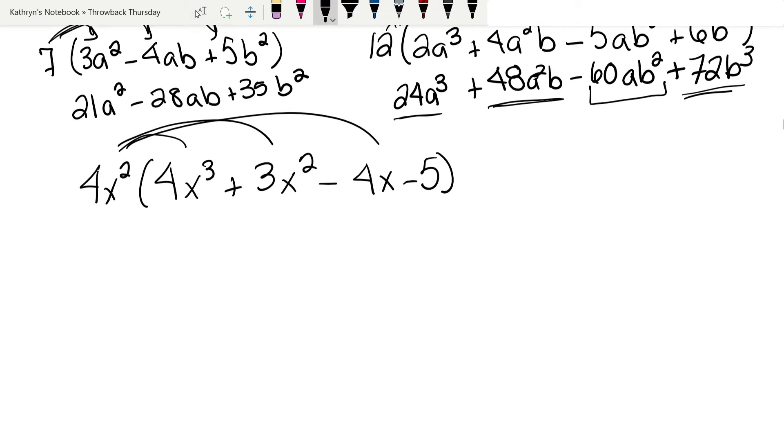We're going to have 4x². I'm going to write this one out. 4x² times 4x³. 4 times 4 is 16. Now when we multiply and we have the same base, we just add the exponents. So this will be x⁵. I'm going to take 4x² times 3x². 4 times 3 is 12, a positive 12. I'm going to add my exponents because I'm multiplying x⁴.